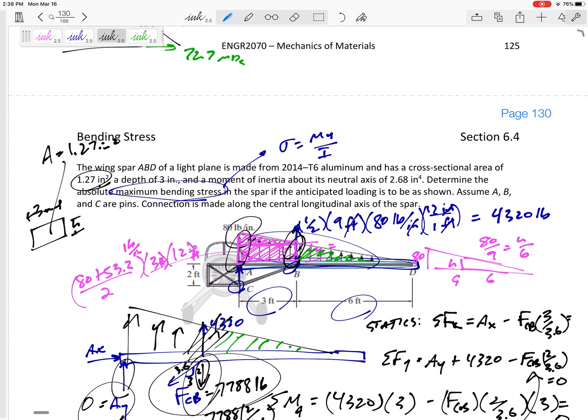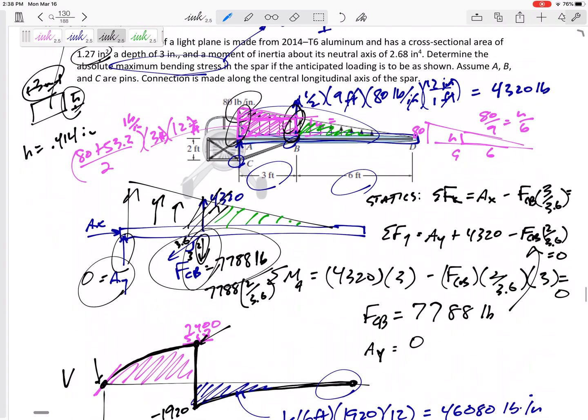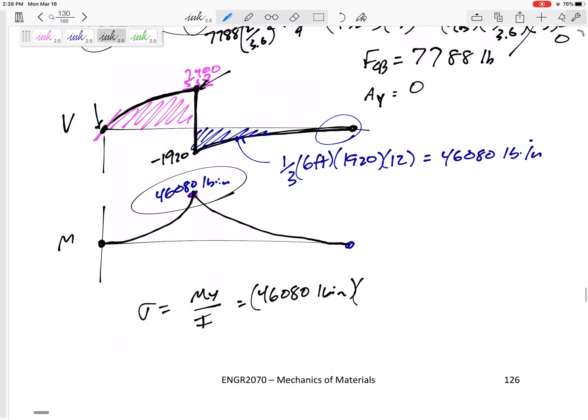We've got to find the height, so base times height equals area. The height would be 0.414 inches. So the maximum y would occur at the very top or the very bottom. This would be 0.207 inches right there.